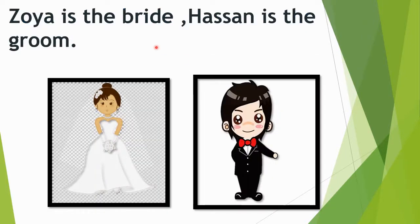Zoya is the bride, Hassan is the groom. As you can see in the picture, the girl's name is Zoya and the boy's name is Hassan. Zoya is the bride — the girl who is getting married — and Hassan is the groom, the boy who is getting married. They are going to get married to each other. Now we know who is the bride and who is the groom.